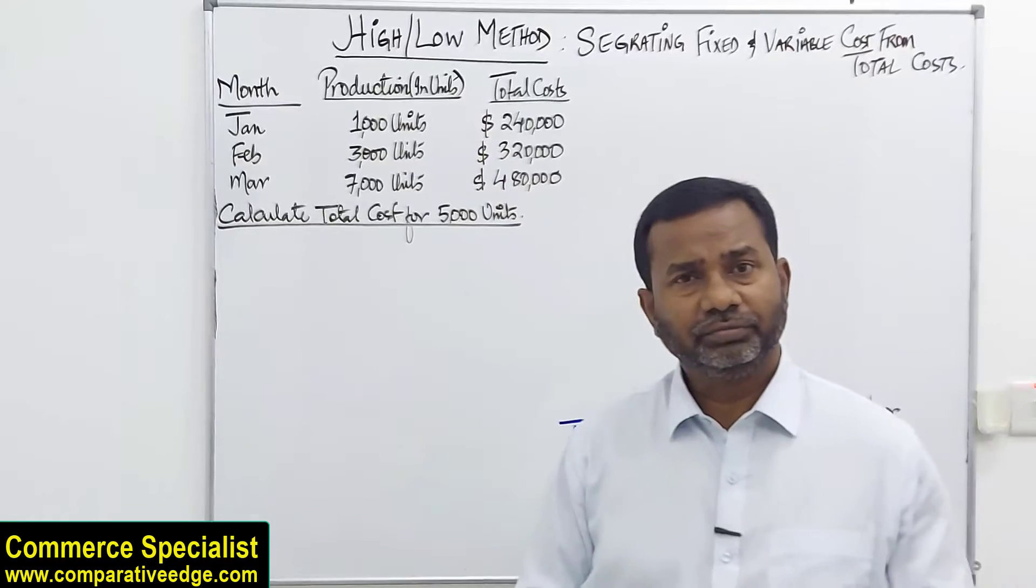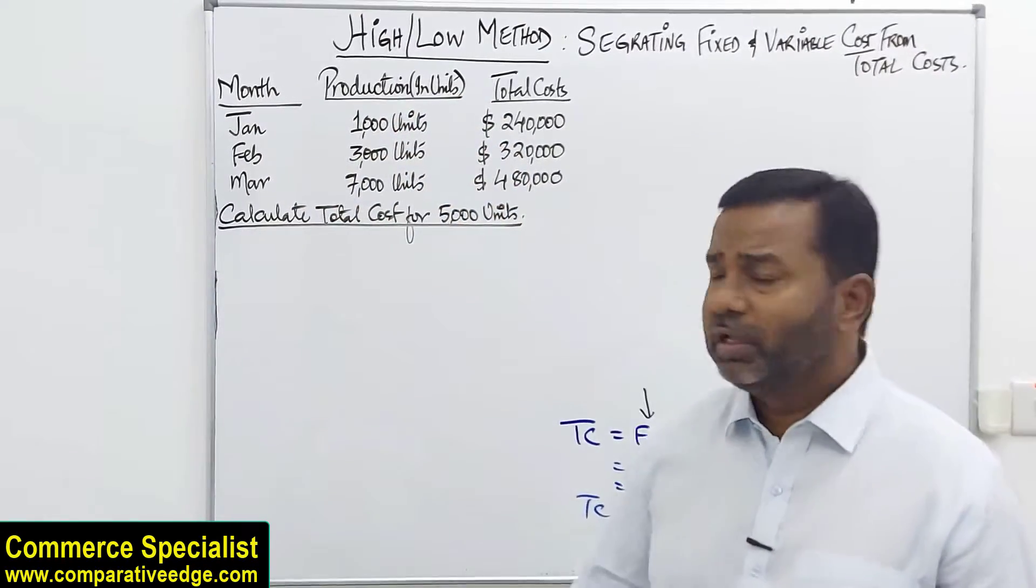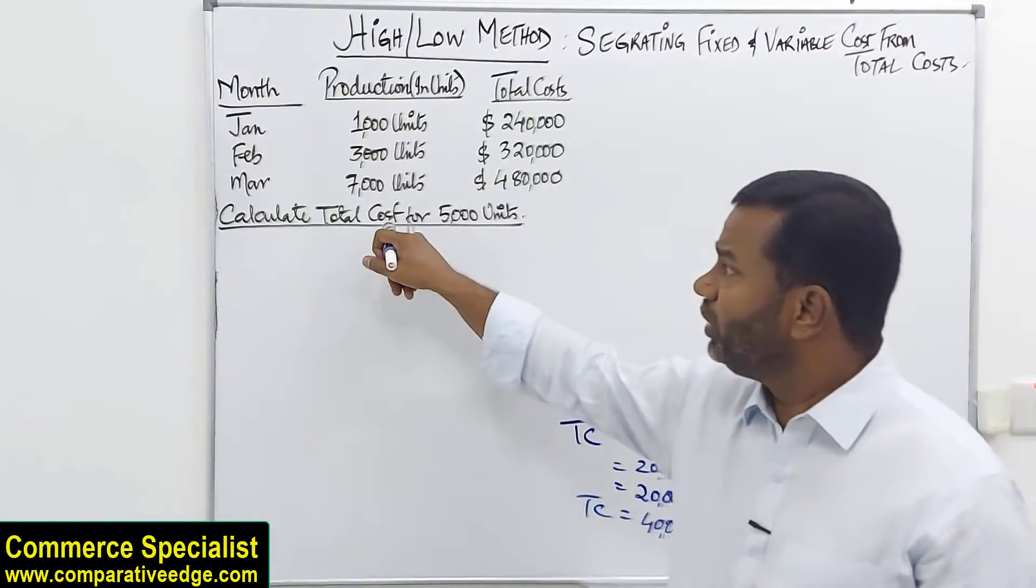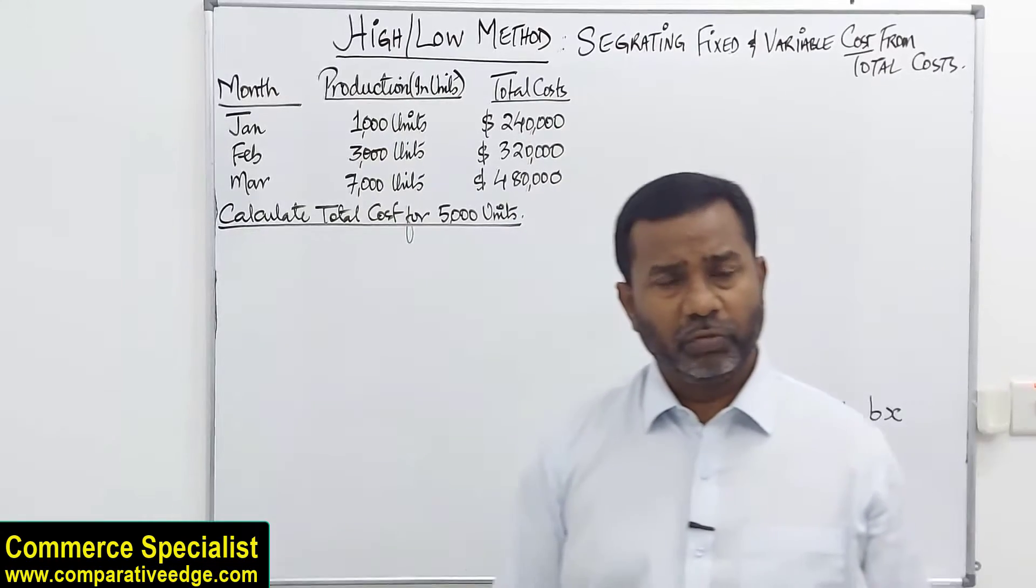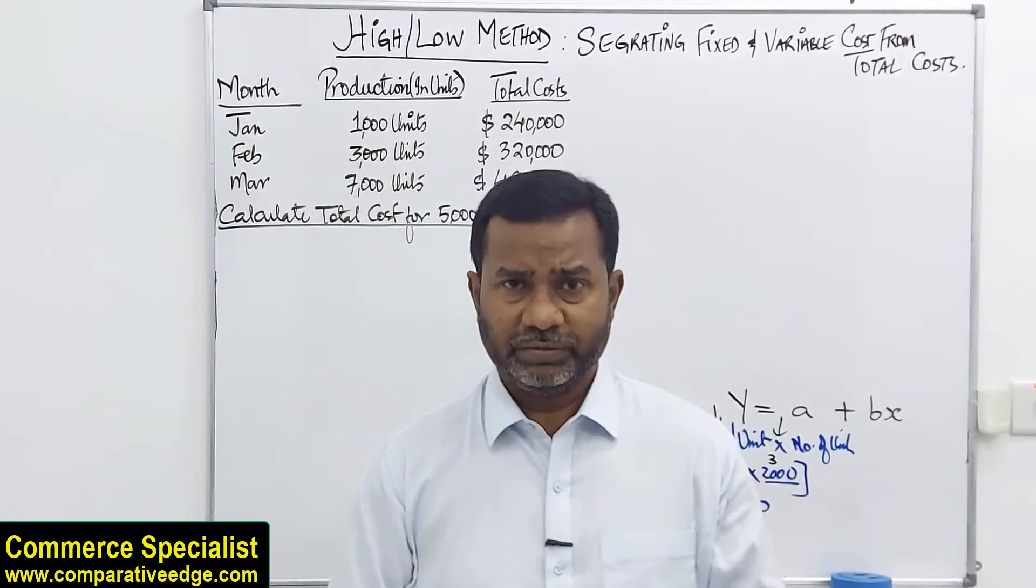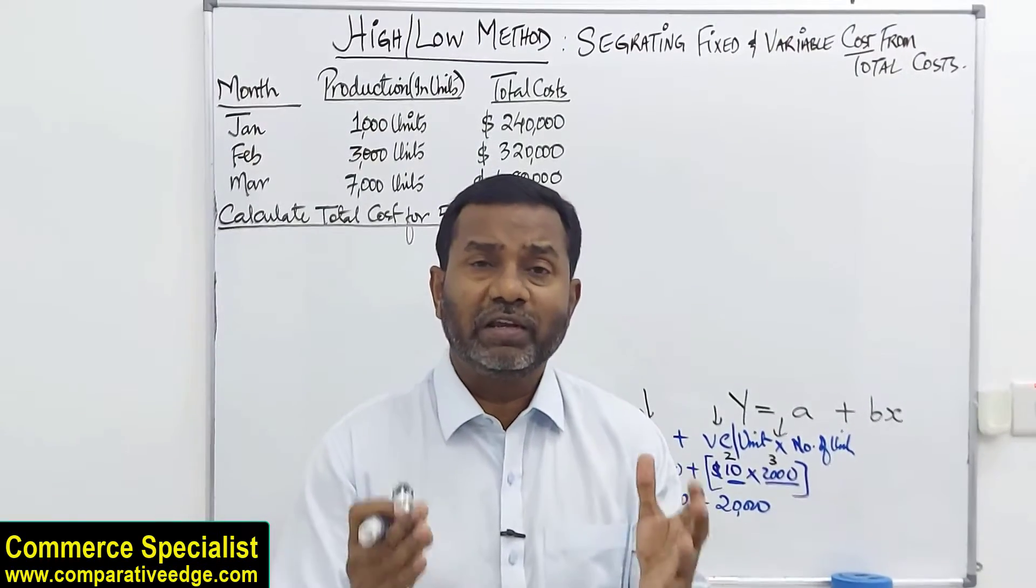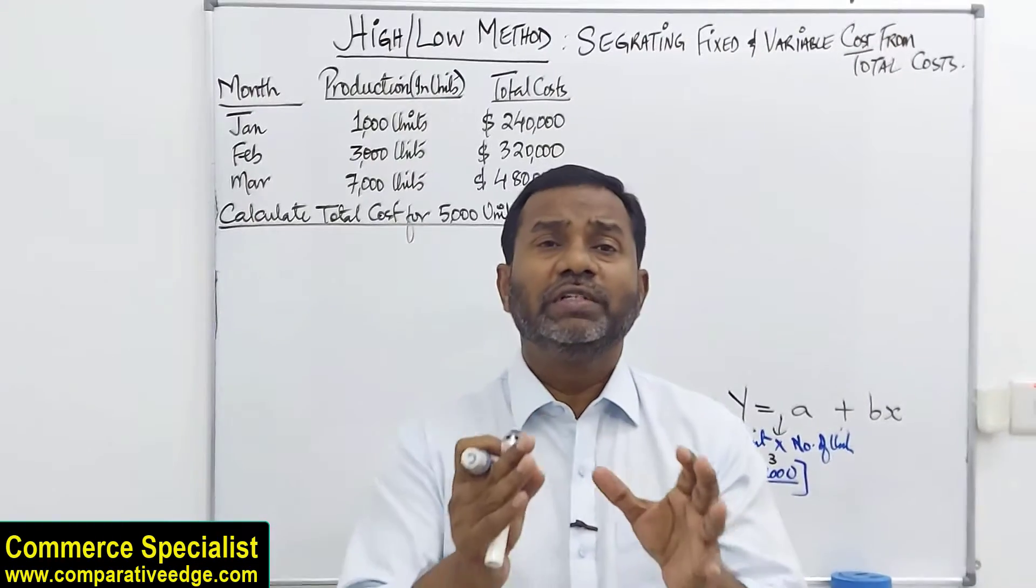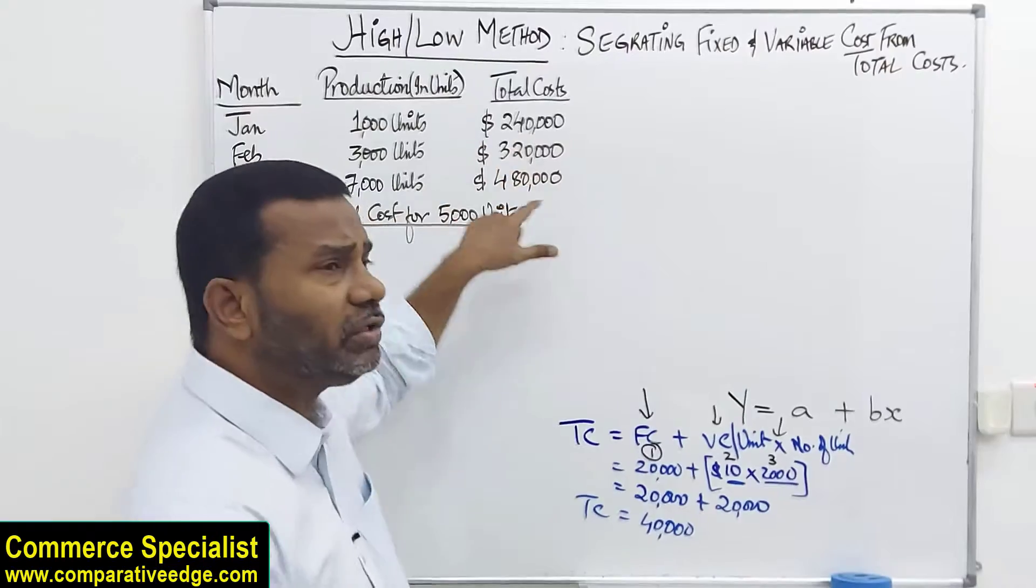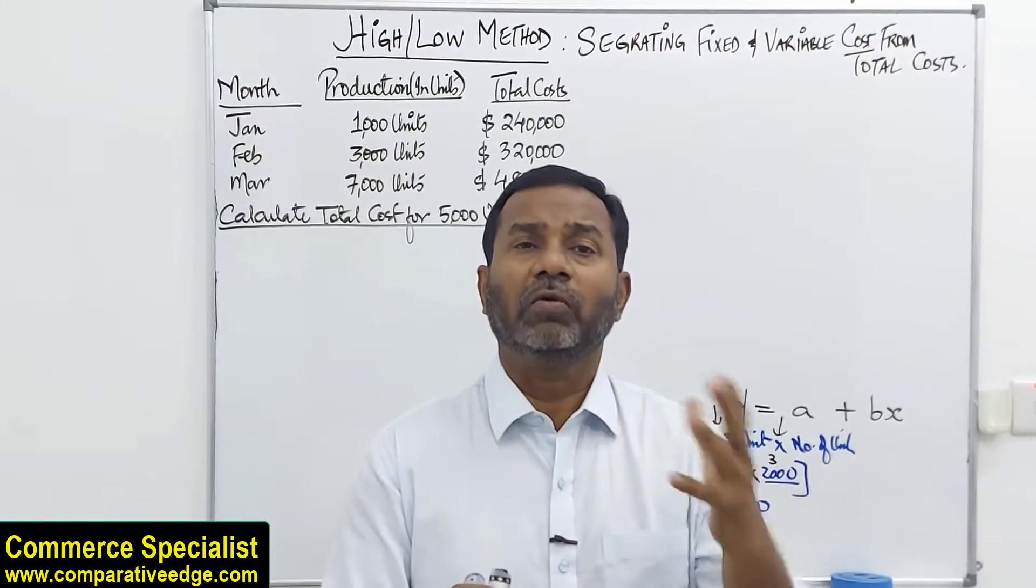Now what if information is given like this? You are given the number of units: in January the company made 1,000 units, in February 3,000 units, in March 7,000 units. And the total cost is given. Remember total cost is given. We don't know how much is fixed, how much is variable. In the end we are asked to calculate total cost if 5,000 units are made and sold. So how can I calculate total cost for 5,000 units when I don't know how much is fixed cost and how much is variable cost? We are going to use the tool and technique of high-low method. High-low method is used to segregate fixed cost and variable cost from total cost.